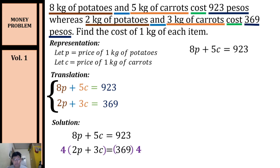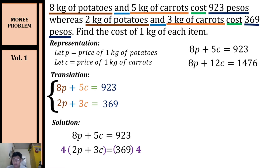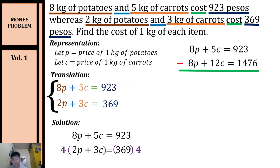I decided to eliminate the variable p. To eliminate p, we need to multiply our second equation by 4, making it the same coefficient as our first equation. Our first equation stays: 8p + 5c = 923. Multiplying the second equation by 4 gives us: 8p + 12c = 1476.